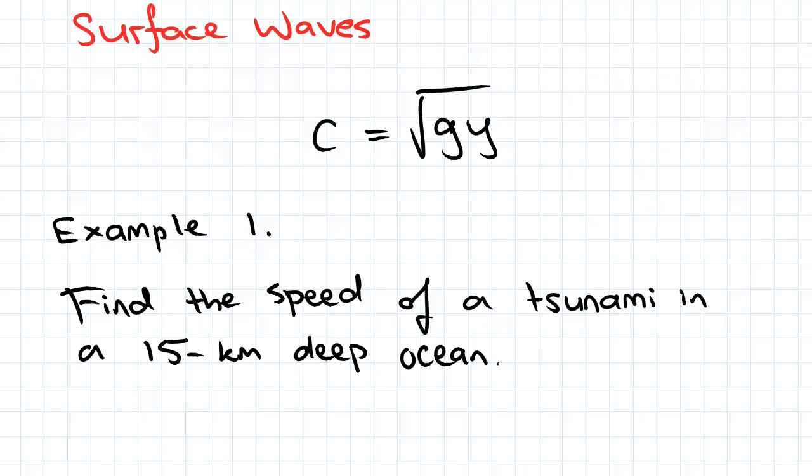The speed at which these ripples or surface waves expand away from the initial disturbance is given by this equation here, c equals square root of gy, where y is the depth of the body of fluid. It generally applies to small amplitude waves only, but it's a nice and quick approximation for larger amplitude waves as well.